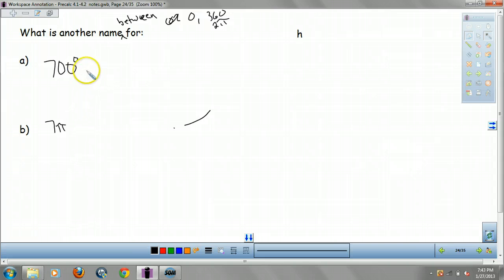So here's what you do, guys. Keep subtracting 360 until you get back into that realm. So 700 minus 360 is what? 340, right? So that's the other name for the angle.